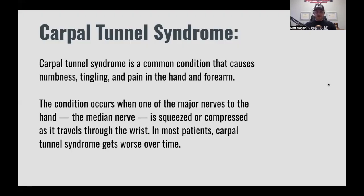Let's start with a definition of carpal tunnel syndrome. Carpal tunnel syndrome is a common condition that causes numbness, tingling, and pain in the hand and the forearm. The condition occurs when one of the major nerves to the hand, specifically the median nerve, is squeezed or compressed as it travels through the wrist. In most patients, carpal tunnel syndrome gets worse over time. That's the working definition from the traditional medical model.